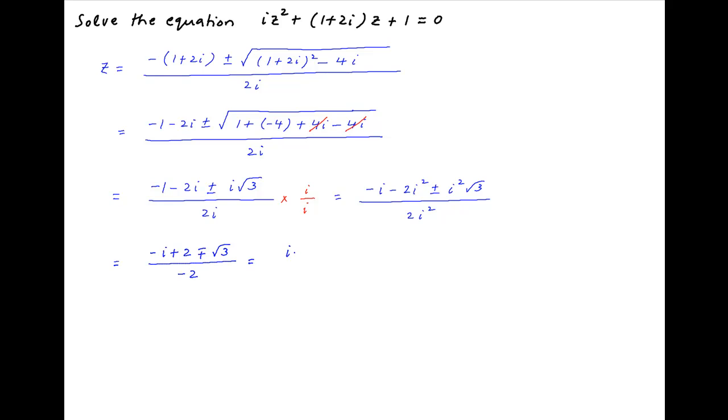Multiply both numerator and denominator by minus 1. We get i minus 2 plus minus root 3 upon 2, which is the required answer.